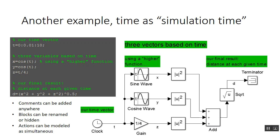To form d, each signal x, y, and z goes through a u-squared block, then they're all summed together, and that sum is taken to the one-half power (square root). That forms d, which goes to a terminator. Ultimately it drives d through a series of values over time.